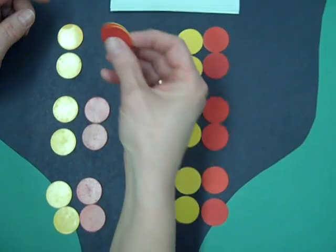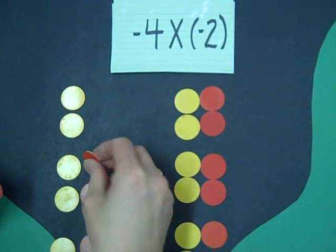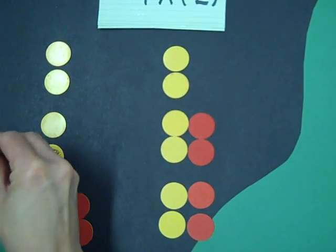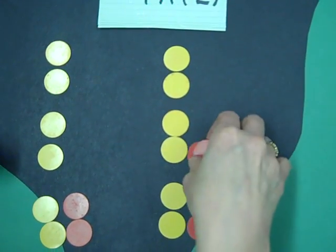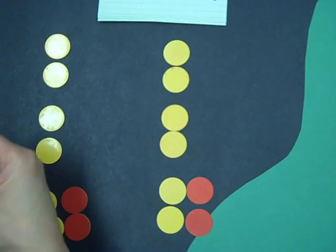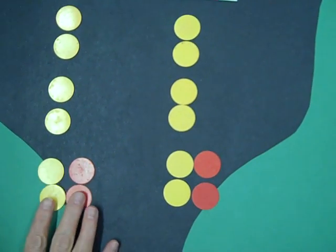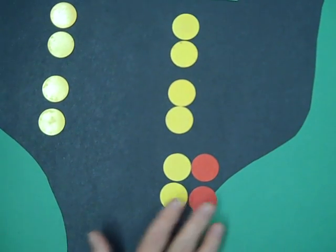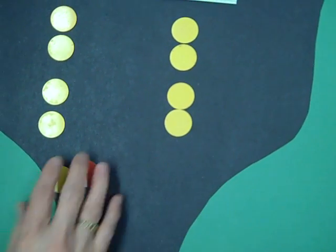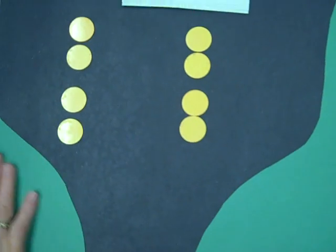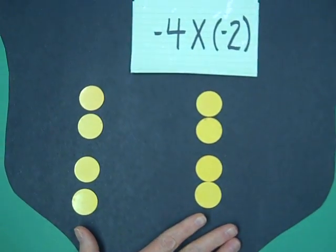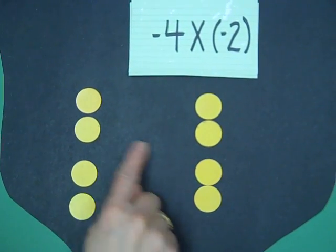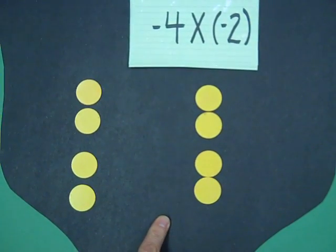So I'm going to be removing my reds. Here's my first group, gone. My second group is going to go. My third group. My fourth group. Now we've got all these zero pairs. This equals zero. This equals zero. This one. And this one. What's left is my answer. Negative four times negative two gives me positive eight.